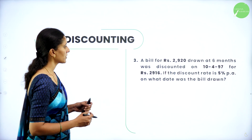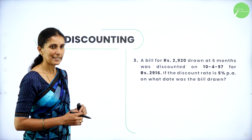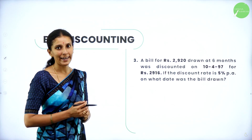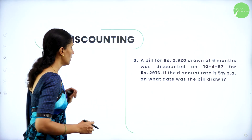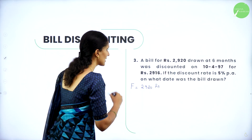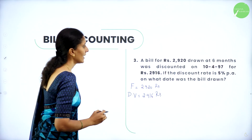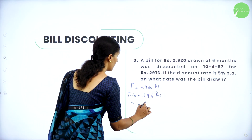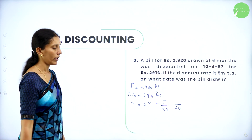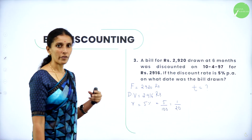Next question: a bill for Rs. 2920 drawn at six months was discounted on 10th April '97 for Rs. 2916. If the discount rate is 5% per annum, on what date was the bill drawn? So we have to find the drawing date of the bill. First write down what is given: face value is Rs. 2920, discounted value (DV) is Rs. 2916, and rate of interest is 5%, written as 5 by 100 or 1 by 20.